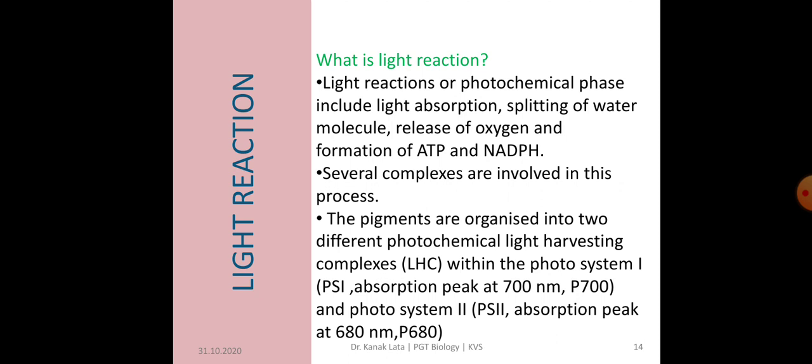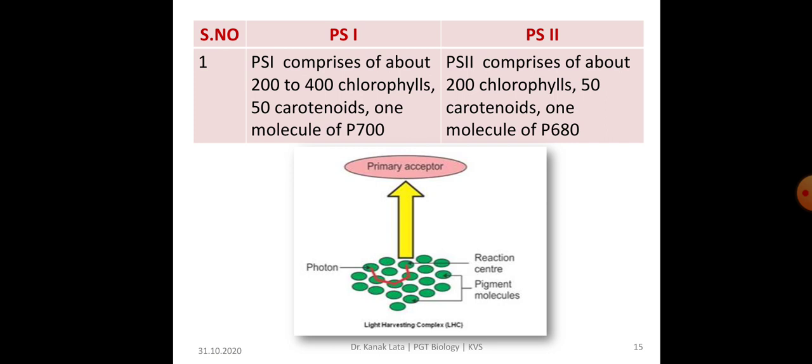Hence, it is called as P700. While in photosystem 2, it has absorption peak at 680 nanometer and it is called P680. Here it is about PS1 and PS2, that is photosystem 1 and photosystem 2.